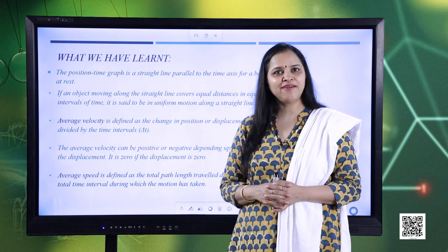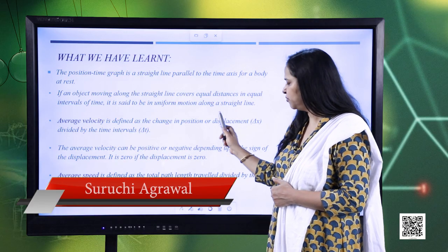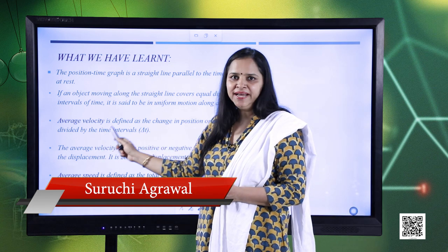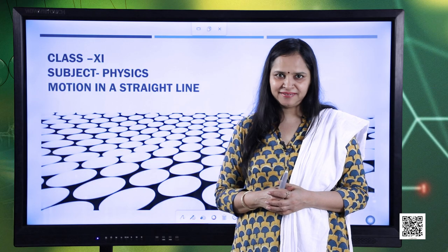Let us recall what we have learnt today. The position-time graph is a straight line parallel to the time axis for a body at rest. If an object moving along a straight line covers equal distances in equal intervals of time, it is in uniform motion. Average velocity is defined as the change in position or displacement divided by the time interval. Average velocity can be positive or negative depending upon the sign of displacement, and is zero if displacement is zero. Average speed is defined as the total path length traveled divided by the total time interval during which the motion has taken place.